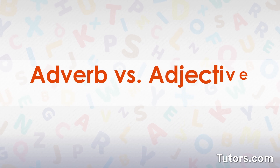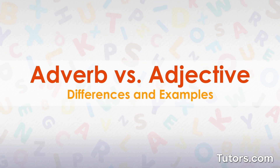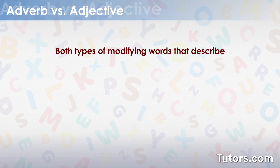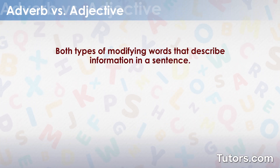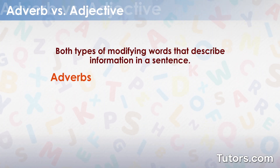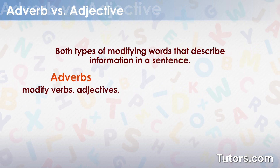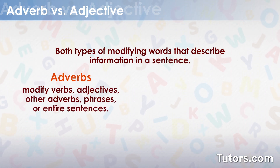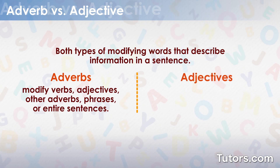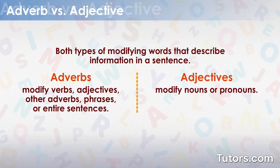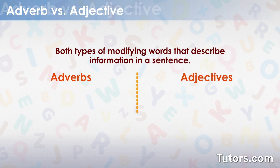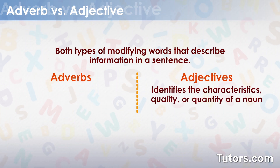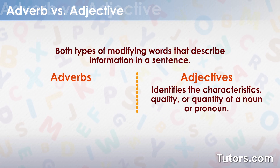Adverb vs. Adjective. Adverbs and adjectives are both types of modifying words that describe information in a sentence. Adverbs modify verbs, adjectives, or other adverbs, phrases, or entire sentences, whereas adjectives modify nouns or pronouns. An adjective identifies the characteristics, quality, or quantity of a noun or pronoun.